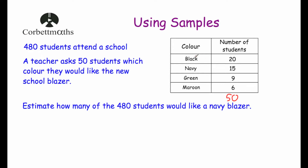For instance, if we looked at how many students liked a black blazer — that was 20 — then 20 out of 50 would be two-fifths as a fraction. So we'd be assuming that because two-fifths of the sample would like a black blazer, two-fifths of all the students would like a black blazer. That's an assumption we're making. Now we've been asked to estimate how many of the 480 students would like a navy blazer.